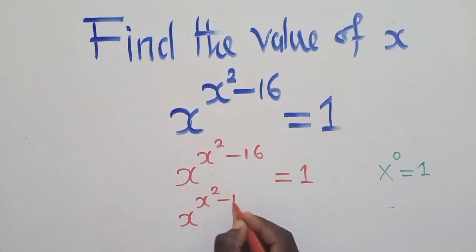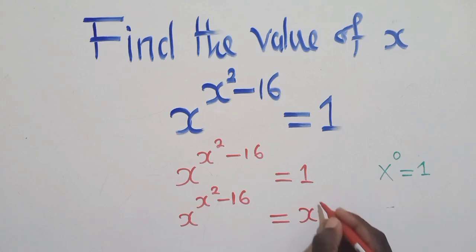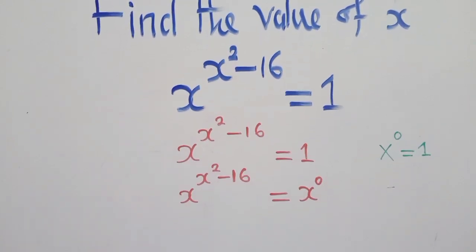So we shall maintain what we have to the left-hand side. And to the right-hand side, we are going to say x to the power 0, of which we know that x to the power 0 is the same as 1, following this rule right here.